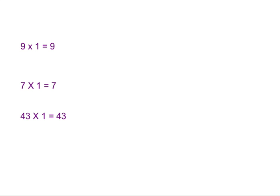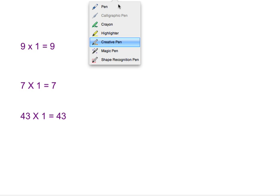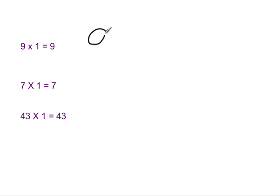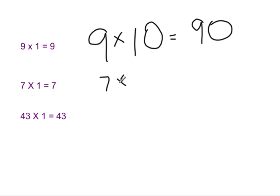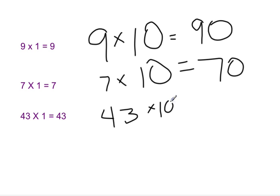So let's say I'm going to take 9 times 10. Most of you should already know this because you know how to count by tens. The answer should be 90. If I did 7 times 10, the answer is 70. And if I did 43 times 10, my answer is 430. Did anybody notice what's happening when we multiply these numbers by 10? Basically we get the same answer as the first time except we're adding a 0 to our ones column.